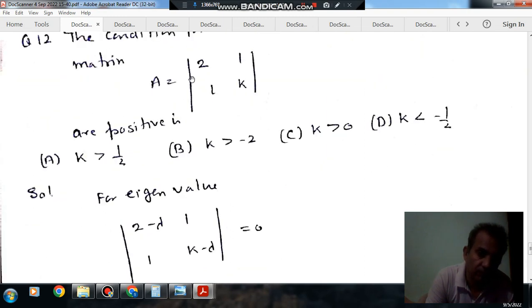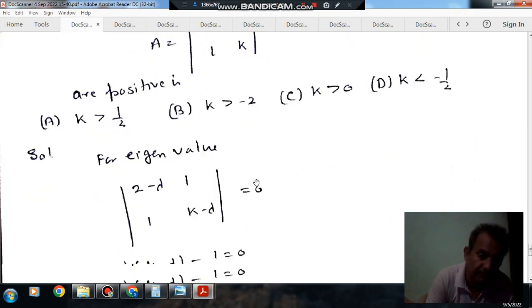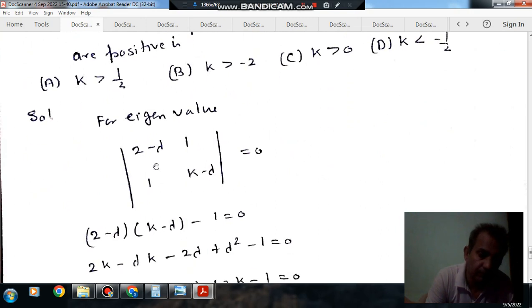So, for eigenvalue, we will subtract lambda from the diagonal elements, put it equal to 0, find its determinant, and then find out the value of lambda.